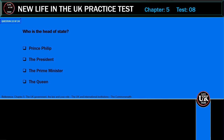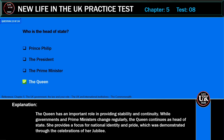Who is the head of state? Prince Philip, the President, the Prime Minister, or the Queen? Correct answer: the Queen. Explanation: The Queen has an important role in providing stability and continuity while governments and prime ministers change regularly. The Queen continues as head of state. She provides a focus for national identity and pride, which was demonstrated through the celebrations of her jubilee.